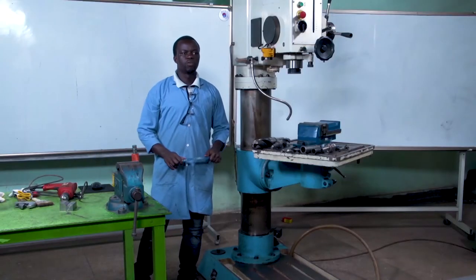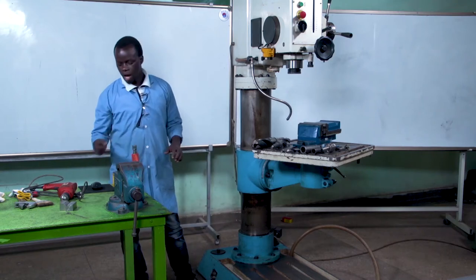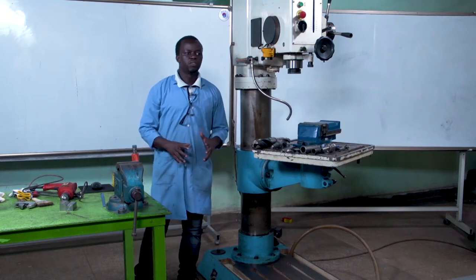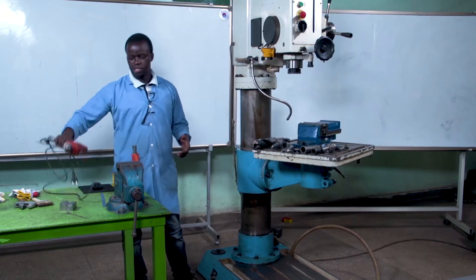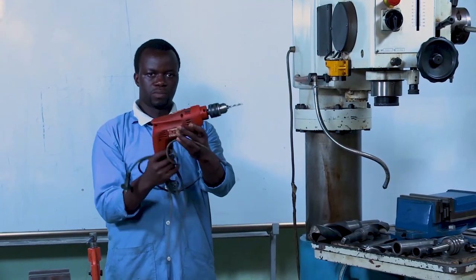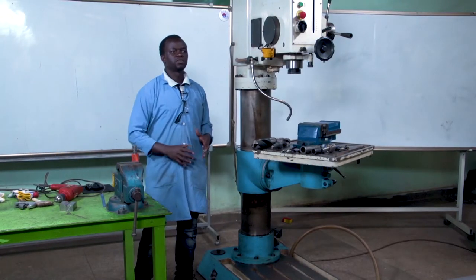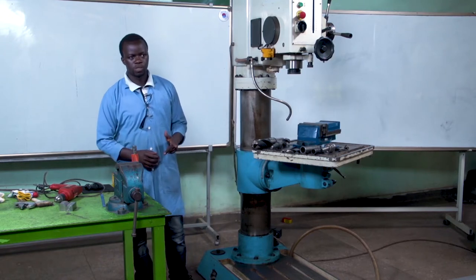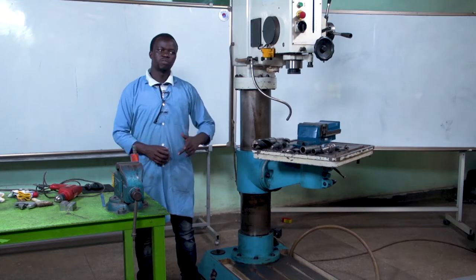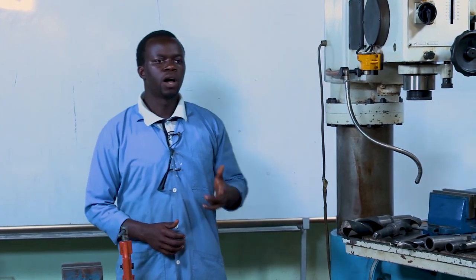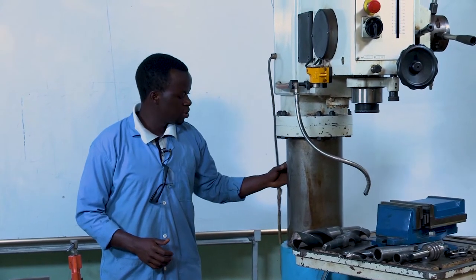Now we are going to see the types of drilling machines. There are many types. We have a portable drilling machine. We also have a sensitive drilling machine, which comes in two types: a bench-mounting sensitive drilling machine. We also have the pillar drilling machine. The pillar drilling machine is classified into two categories: the pillar drilling machine which has a round column section, and the pillar drilling machine which has a box column section.